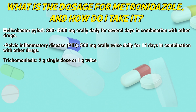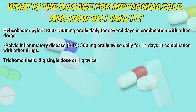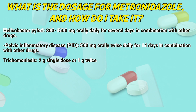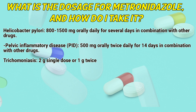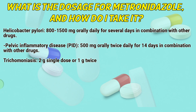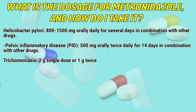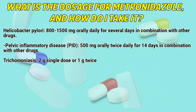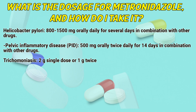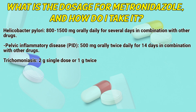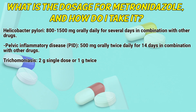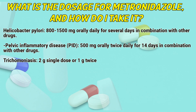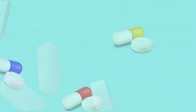Helicobacter pylori: 1000–1500 mg orally daily for several days in combination with other drugs. Pelvic inflammatory disease: 500 mg orally twice daily for 14 days in combination with other drugs. Trichomonosis: 2 g single dose or 1 g twice daily.